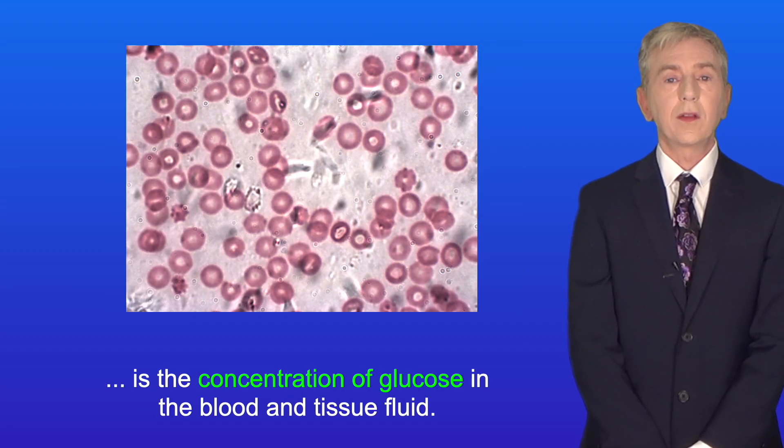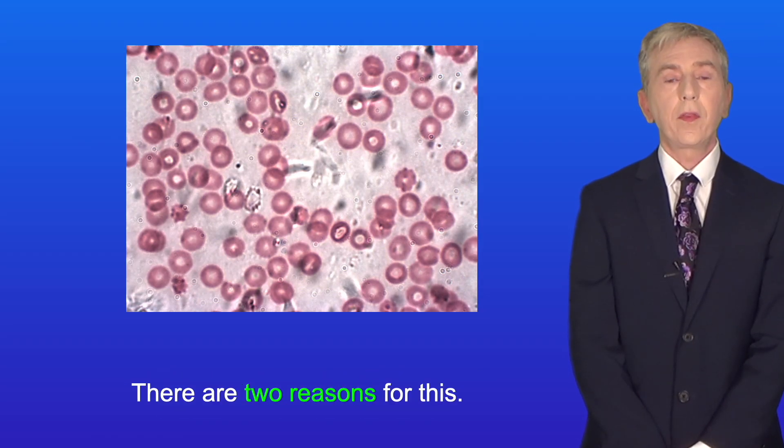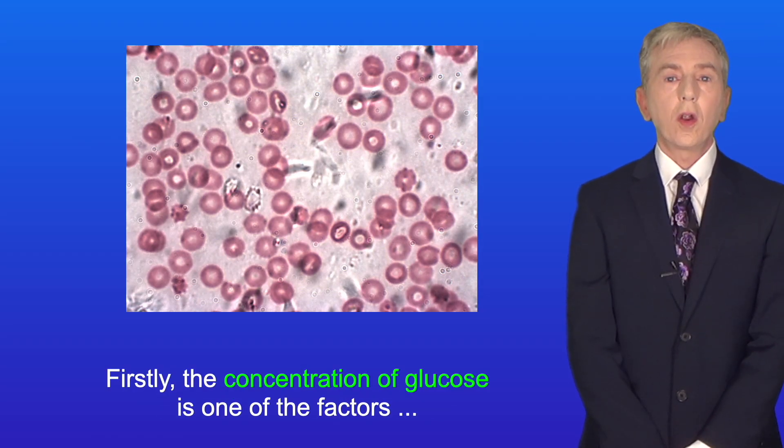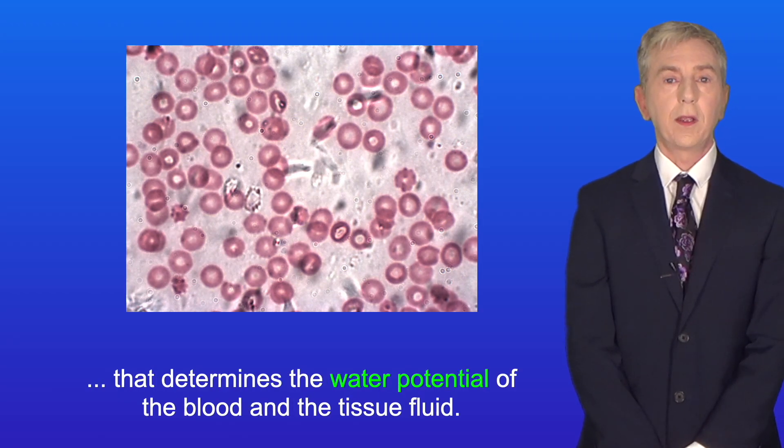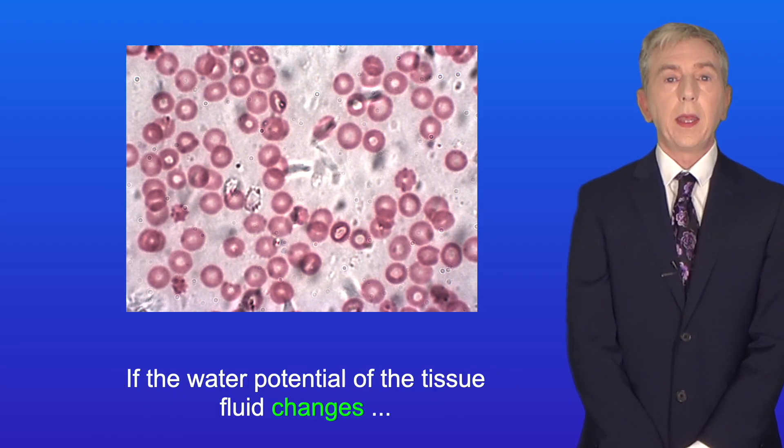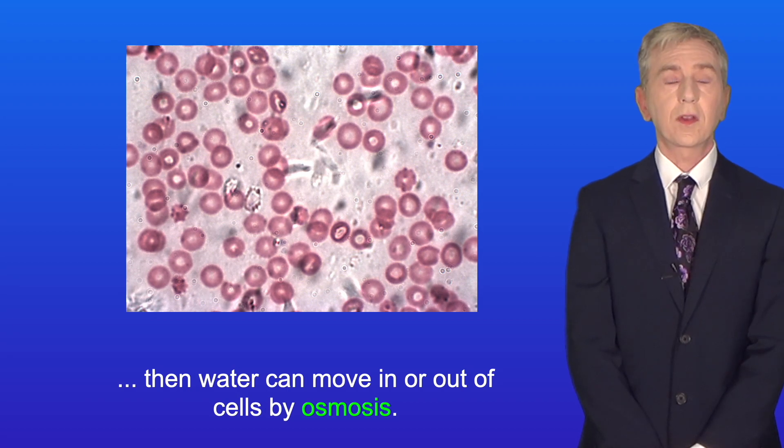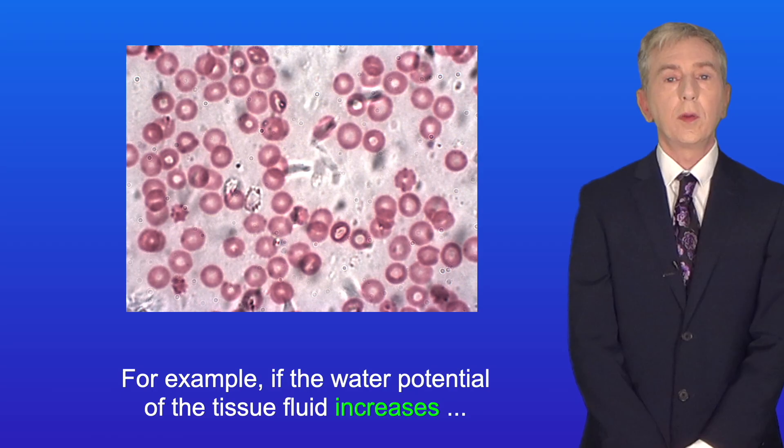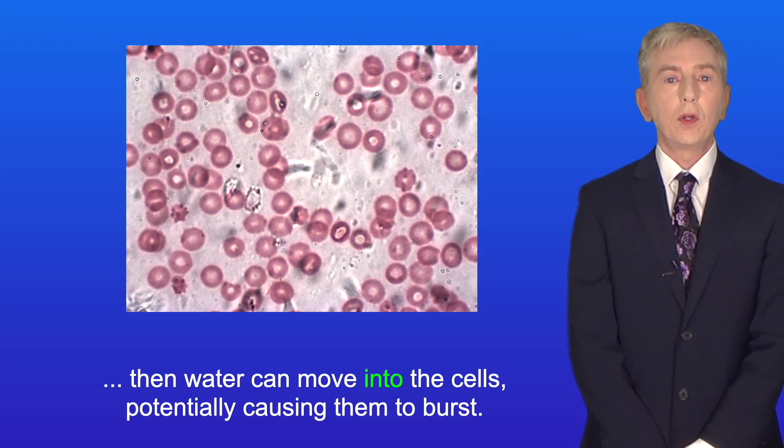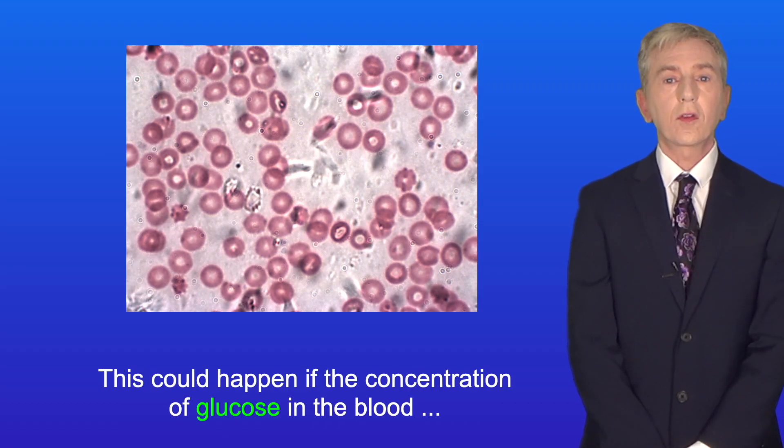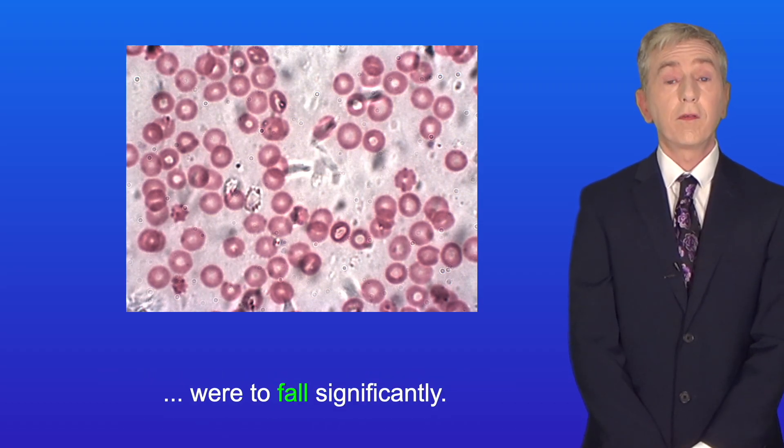Now another parameter that must be controlled is the concentration of glucose in the blood and tissue fluid. And there are two reasons for this. Firstly, the concentration of glucose is one of the factors that determines the water potential of the blood and the tissue fluid. If the water potential of the tissue fluid changes, then water can move in or out of cells by osmosis. For example, if the water potential of the tissue fluid increases, then water can move into the cells, potentially causing them to burst. And this could happen if the concentration of glucose in the blood were to fall significantly.